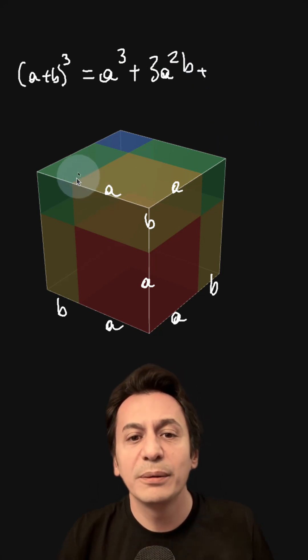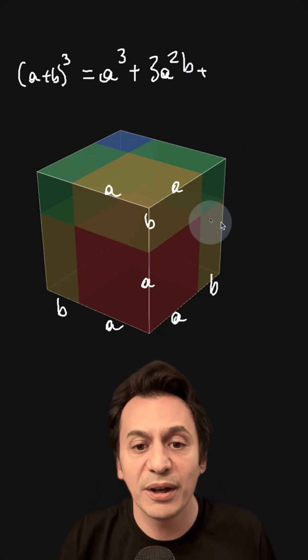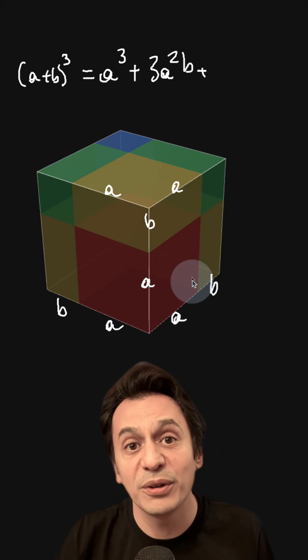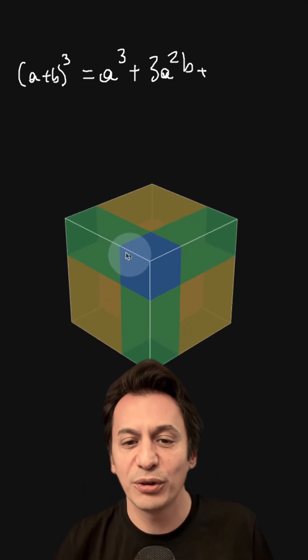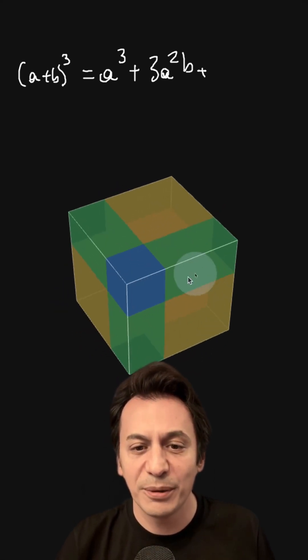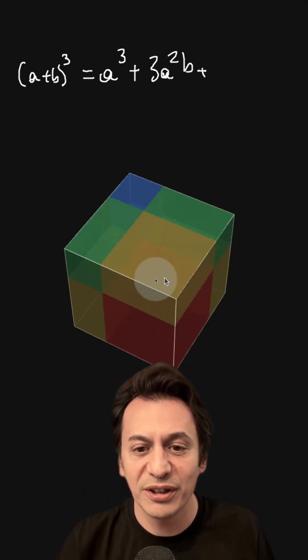Now to calculate the volume of the green and blue pieces, I'll erase these and rotate our cube. This is also an opportunity to take a tour around the cube. Here we have a cube made up of A plus B. Let's rotate it like this.